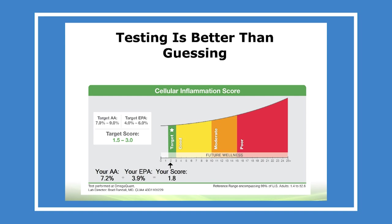Rather than guessing, always test. We developed a simple finger-stick blood test that tells you exactly what the AA:EPA ratio is. The green zone is where you want to be. As you go from green to yellow to orange to red, you have higher and higher levels of low-level chronic inflammation. Most Americans are around 20 — that's the red zone, with an ideal target of 1.5 to 3. The blood will tell you how much omega-3 you need to maintain inflammation under control for a lifetime.